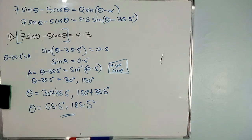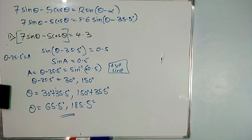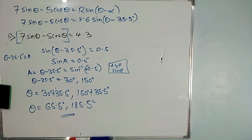You can verify by substituting back: 7 sin(65.5°) minus 5 cos(65.5°) gives approximately 4.3, which confirms that 65.5° is correct. The solutions are theta = 65.5 degrees and theta = 185.5 degrees.